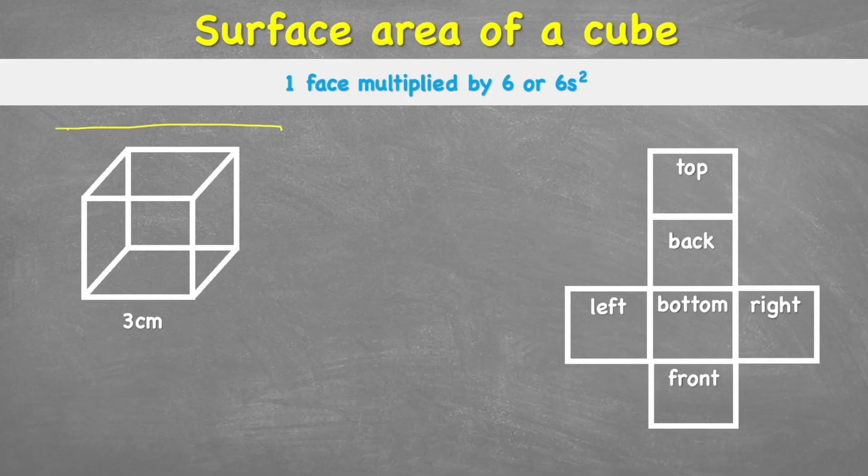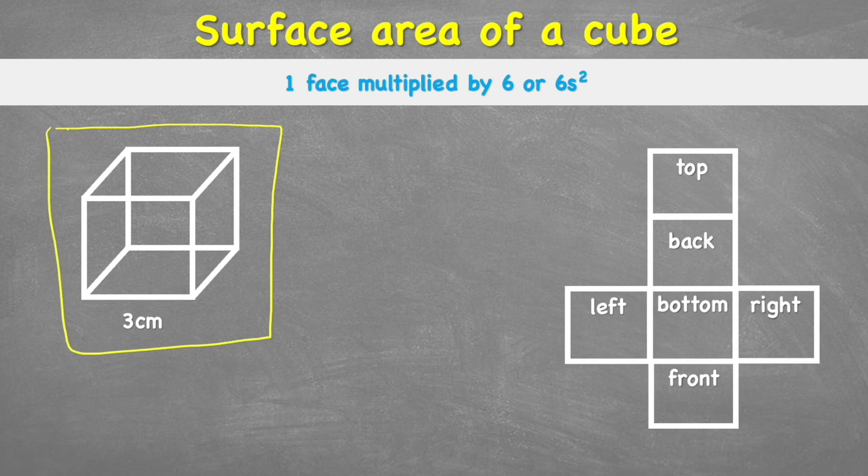A cube is a 3D shape which is made up of six square faces. We have this cube on the left and then on the right we have this cube that I've converted into its net form. The net being its 2D equivalent where the 3D shape has been folded out to be flat. We have two ways of solving this today. We can first work out what one face area is and then multiply it by six, or we can use the formula six times a side squared. We're going to see how they're exactly the same thing.